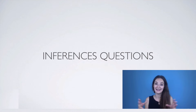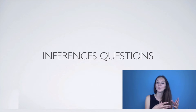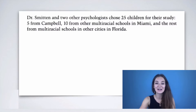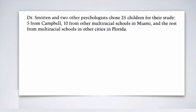Let's have a look at inference questions and discuss what we do to make our job very easy. Here is an example: Dr. Smitten and two other psychologists chose 25 children for their study — five from Campbell, ten from other multiracial schools in Miami, and the rest from multiracial schools in other cities in Florida.